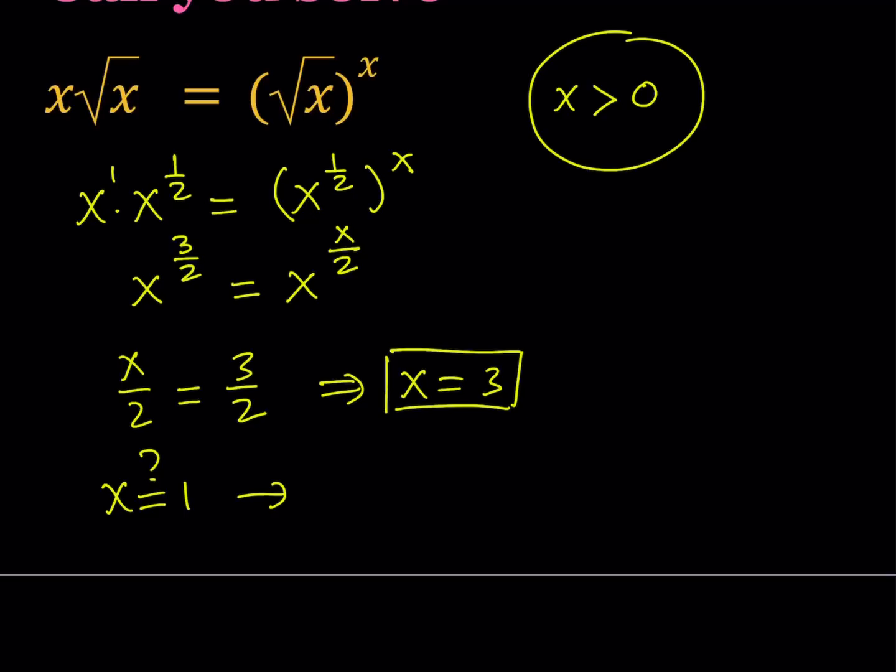If you replace x with 1, you get 1 equals 1. Therefore, x equals 1 is also a valid solution. That basically gives us two solutions. And as you know, we found the 1 by checking. It works. So it's good.